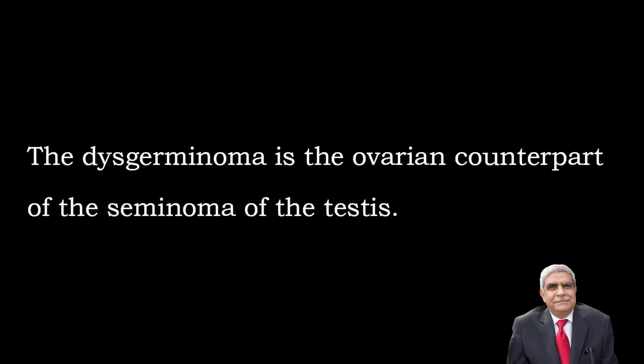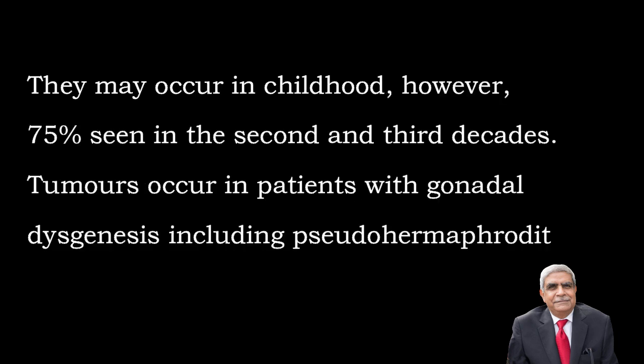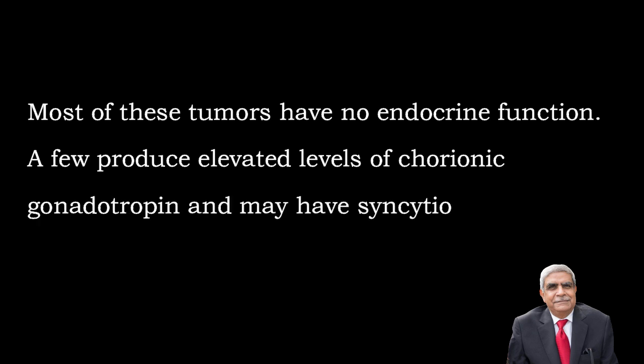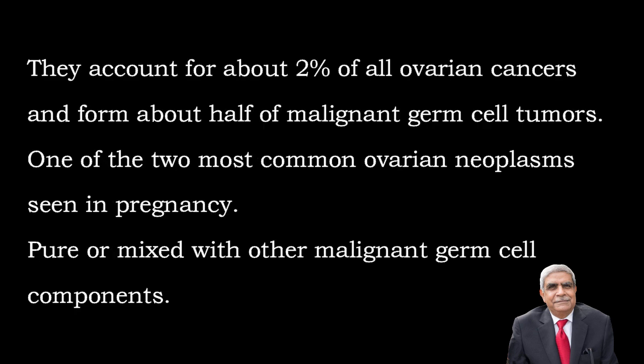Dysgerminoma is a germ cell tumor of the ovary and is the ovarian counterpart of seminoma of the testes. These tumors occur in childhood, however 75% are seen in the second or third decade of life. They occur in patients with gonadal dysgenesis including pseudo-hermaphroditism. Most have no endocrine function, but a few tumors have elevated levels of chorionic gonadotrophin and they have syncytiotrophoblastic giant cells. They account for about 2% of all ovarian cancers.